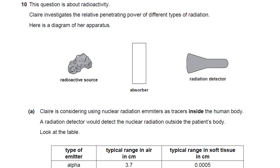Question 10 in this OCR Gateway P2 section. This question is about radioactivity. Claire investigates the relative penetrating power of different types of radiation. Here's a diagram of her apparatus. This is the source, giving out the radiations. This is the thing which is in the way — the absorber — and this is the detector.